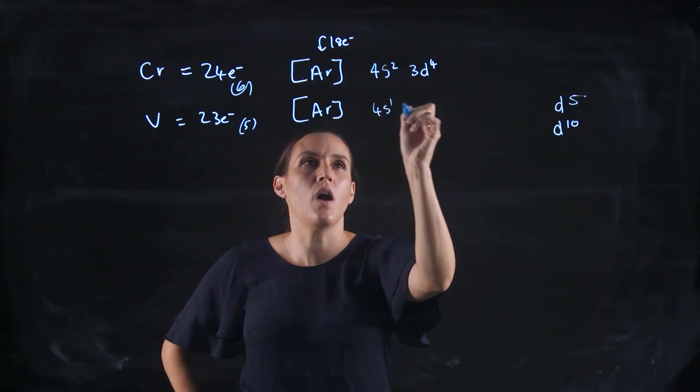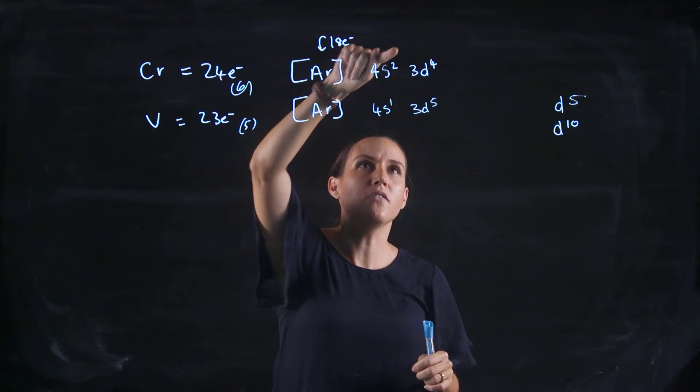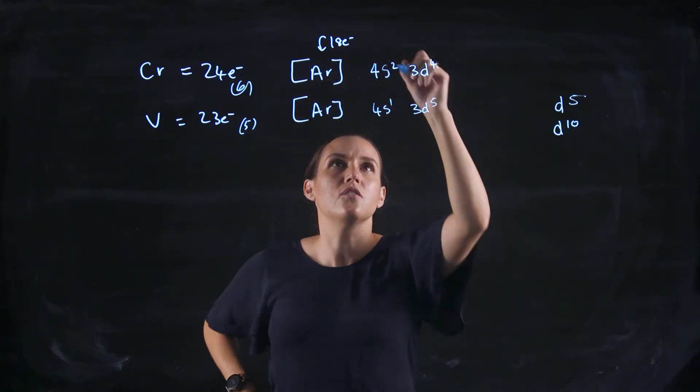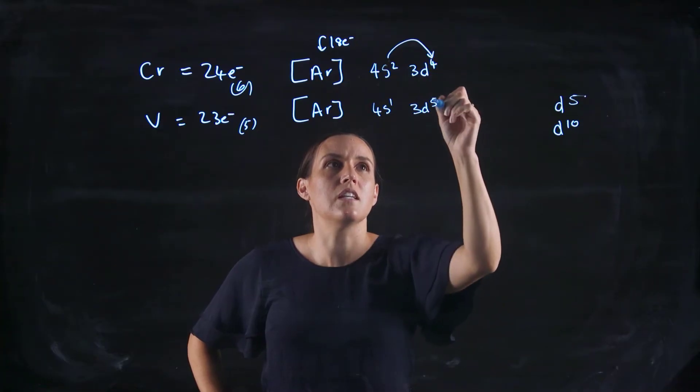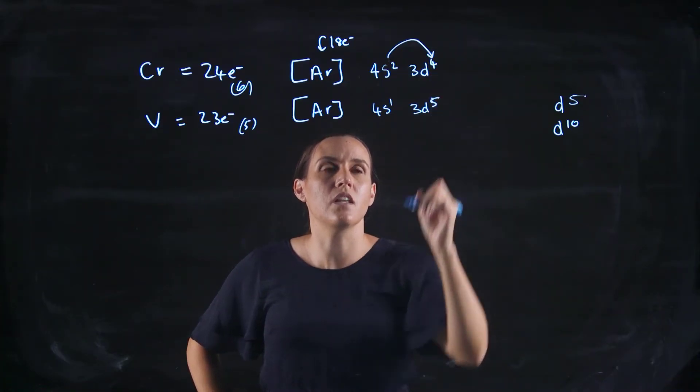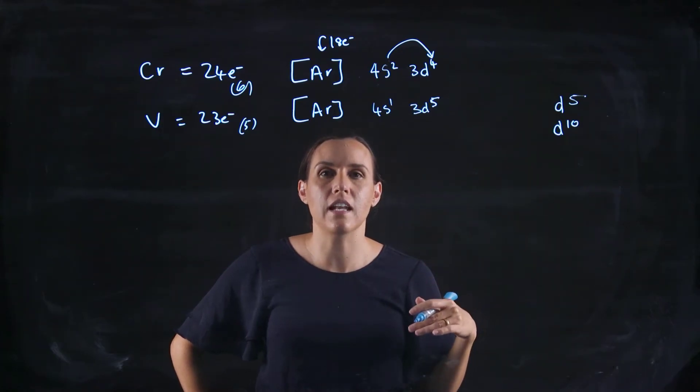So with this one here, I could go 4s1, 3d5. So promote one of these 3ds into the 4, into the 3d to the 4, to give us 5 in those orbitals. So that will overall lower the energy of that atom.